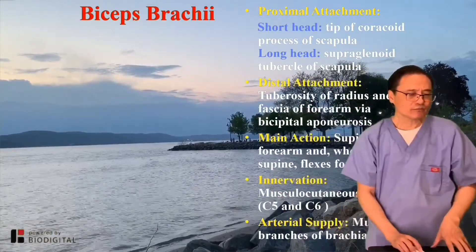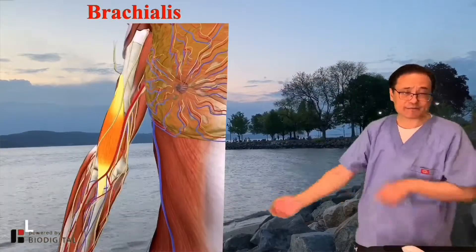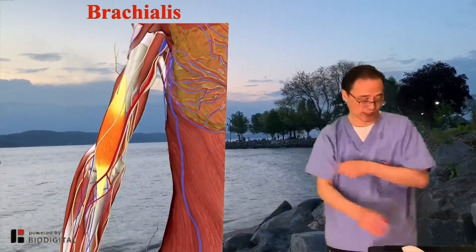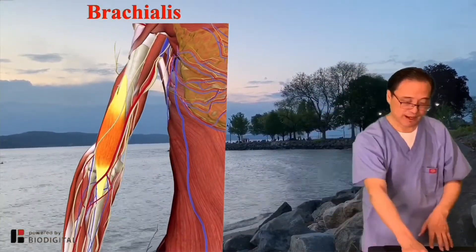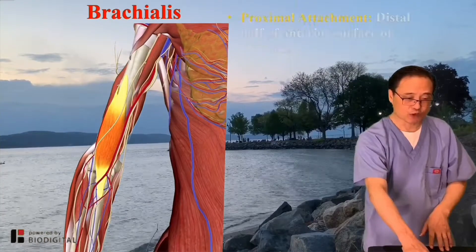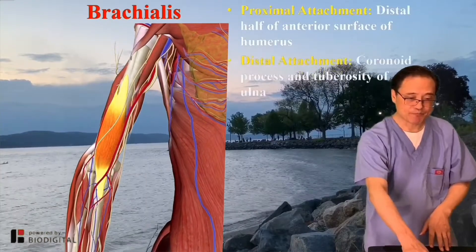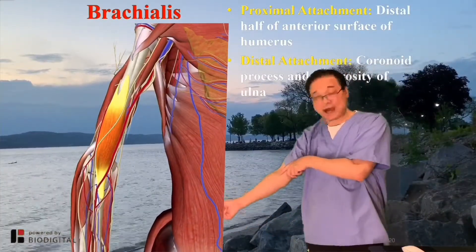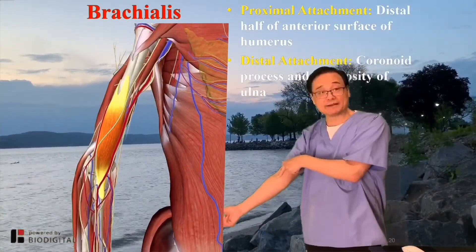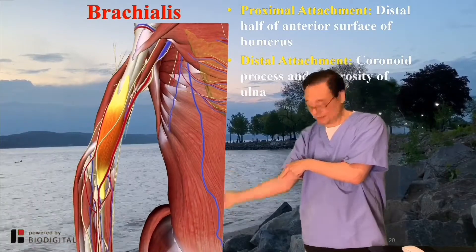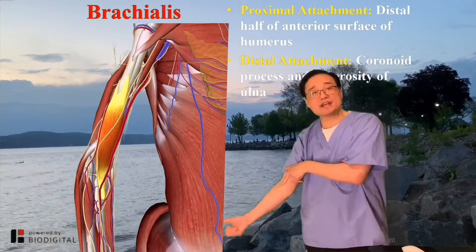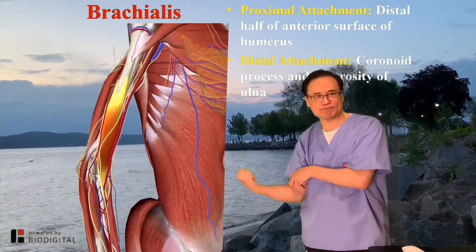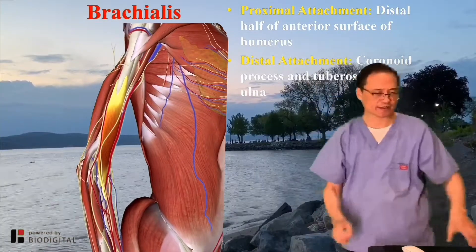Now, the brachialis is directly attached to the ulna side. The tuberosity of the ulna is directly on that — there is no rotation. Every force is used to flex the elbow.